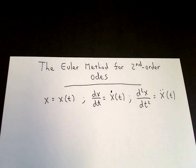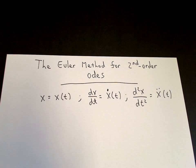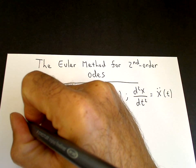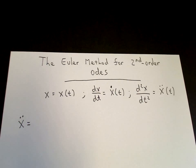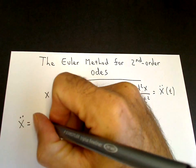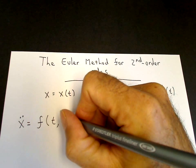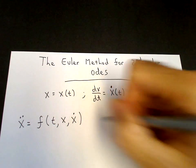Okay, so then the second order differential equation we can write as x double dot, isolating the second derivative term, is equal to some function of t, x, and x dot.